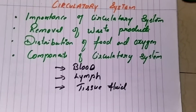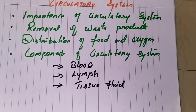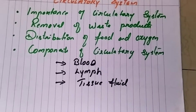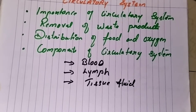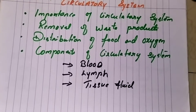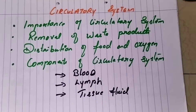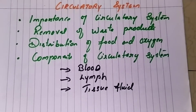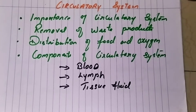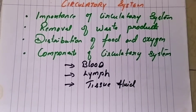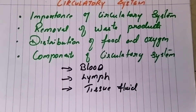Next is the components of the circulatory system. As you can see in the slide, blood, lymph, and tissue fluid are the three components involved in the circulatory system. They carry food, oxygen, and other substances to the body through a system of blood vessels and lymph vessels. The third and most important component is the pumping organ — the heart — which pumps blood throughout these vessels.